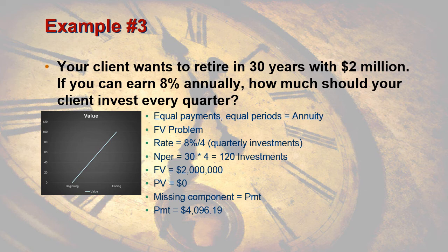It sounds like a lot, but when you really think about it, $4,000 times 120 — you're really only putting in close to half a million dollars into the account, and you're going to end up with a future value balance of $2 million. So again, lots of growth in there.